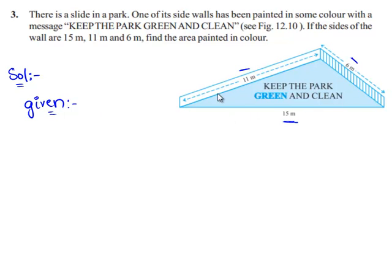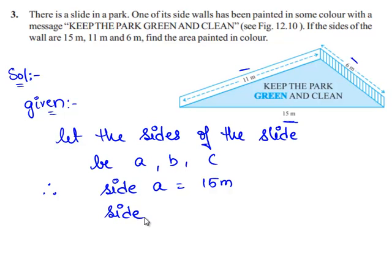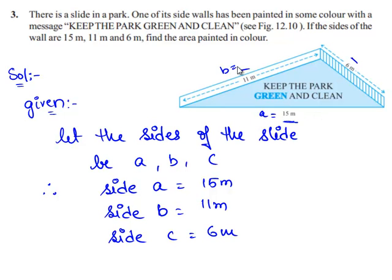The sides of the slide in the park are given in the question. Let its sides be A, B, C. Therefore, the corresponding side A is equal to 15 meters, side B is equal to 11 meters, and side C is equal to 6 meters. Therefore, A = 15, B = 11, and C = 6.